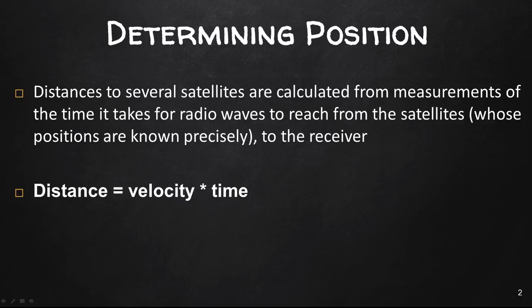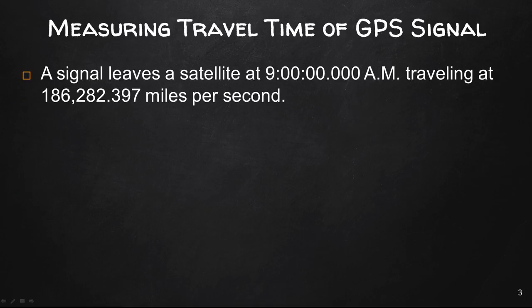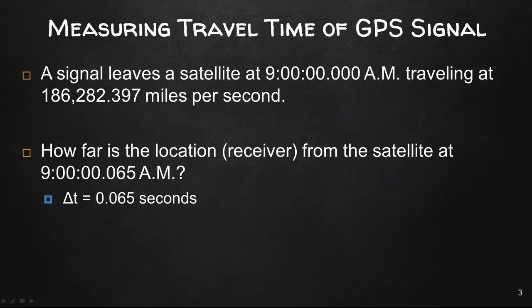So let's look at an example here. A signal leaves a satellite at 9:00:00 a.m. Notice we have a lot of decimals there because we're talking very short periods of time here, less than a second, traveling at 186,000 miles per second. How far is the location, the receiver, from the satellite at 9:00:065 a.m.? So we have a change of time of 0.065 seconds, not even one second.